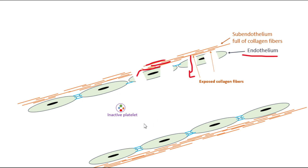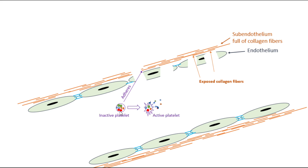One of those blood components is the platelet. Here we have one inactive platelet, and as soon as this inactive platelet gets the opportunity to touch the exposed collagen fibers, it changes its shape from round to a star shape. More importantly, the platelet starts releasing its chemicals out, making it an active platelet. So one way to activate a platelet is to allow it to adhere to — touch — collagen fibers.